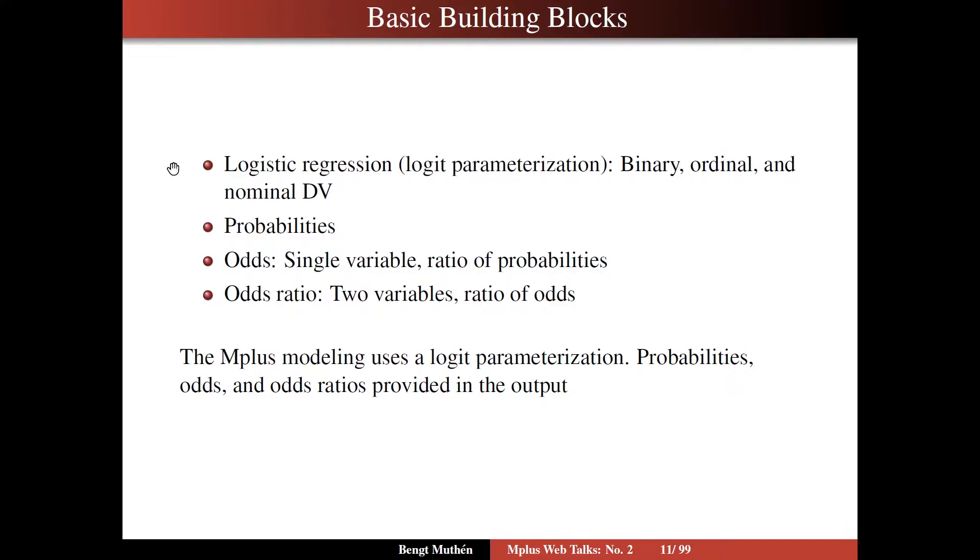We're also going to talk about probabilities and odds and odds ratios. Odds are ratio probabilities and refer to a single variable, categories of a single variable, relating them to each other. Odds ratios refer to a relationship between two variables, and it's a ratio of odds. Now the Mplus modeling uses this logit parameterization to estimate the parameters of the model. But given that those logit estimates may be difficult to interpret, we also provide output that contains probabilities, odds, and odds ratios.